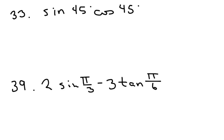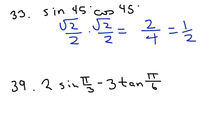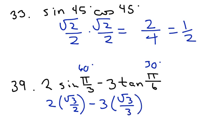33. We have to evaluate sine of 45 times cosine of 45. We know that sine of 45 degrees is root 2 over 2. We know cosine of 45 degrees is root 2 over 2. So root 2 times root 2 is just 2, and 2 times 2 is 4, which equals 1 half. So you do the same thing for 39. We know that sine of pi over 3, this is 60 degrees. This one is 30 degrees. Sine of 60 degrees is root 3 over 2, and tan of 30 degrees is root 3 over 3. So basically, what you can do is cancel those two. Cancel these two. And we're going to get root 3 minus root 3 equals 0.